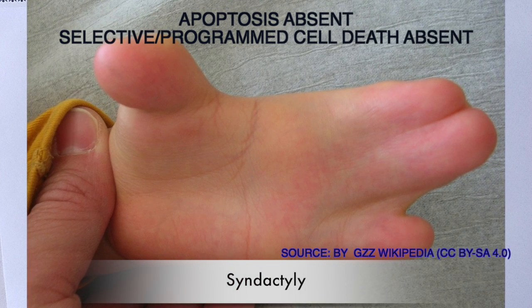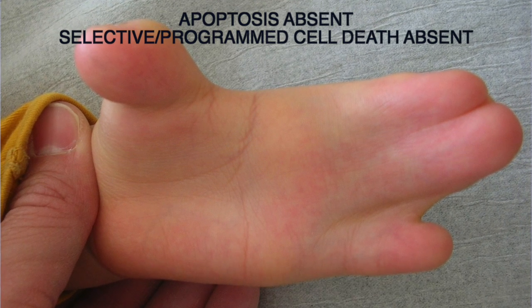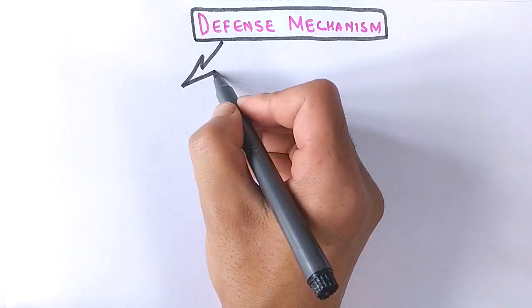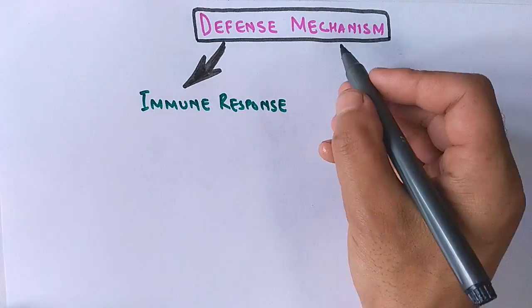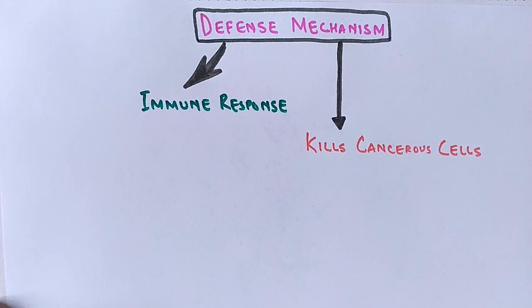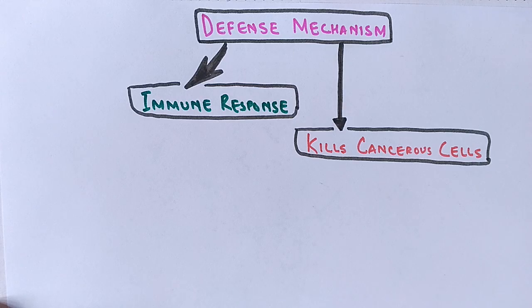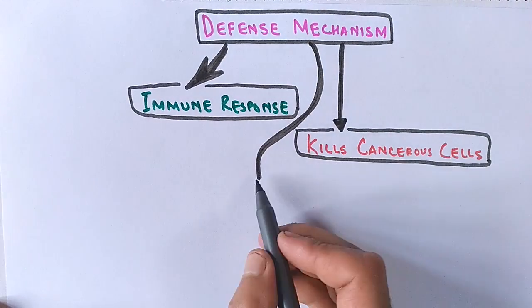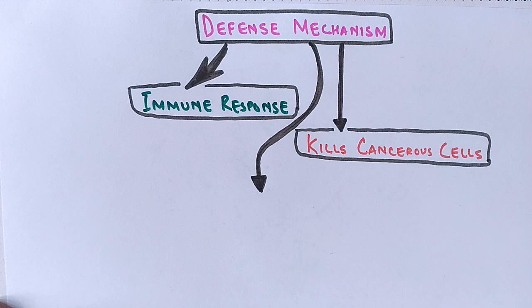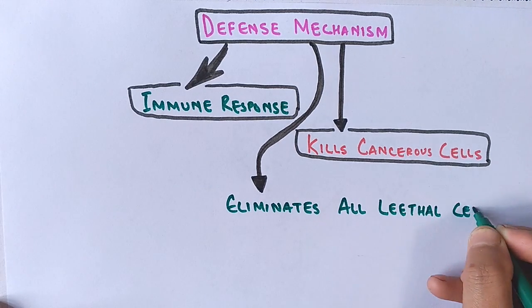As you can see in this picture, a child suffering from this syndrome where apoptosis is absent between the digits. Another function of apoptosis is as a defense mechanism — during immune response, the apoptosis pathway comes into play and kills cancerous cells, but not always. When apoptosis is completely suppressed, cells remain undamaged and keep dividing. That's why we say that in cancerous cells, apoptosis is absent. Apoptosis also eliminates lethal and damaged cells.